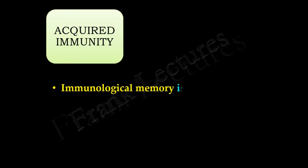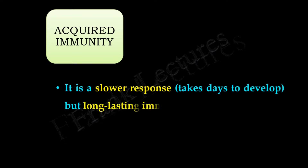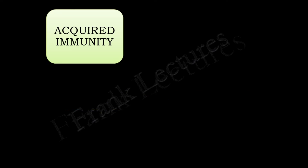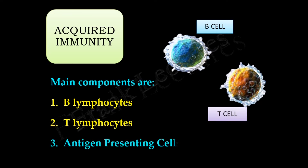Immunological memory is present in acquired immunity — it remembers the previous encounter with a pathogen, and when the same pathogen attacks again, it reacts more quickly and efficiently. Acquired immunity is a slower response, taking days to develop, but it is long lasting. The main components are B lymphocytes (B cells), T lymphocytes (T cells), and antigen presenting cells.